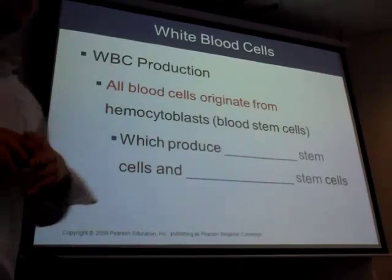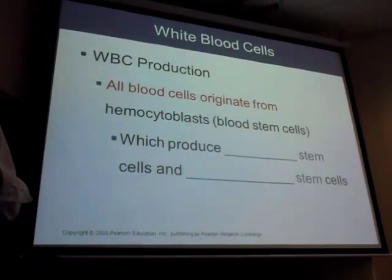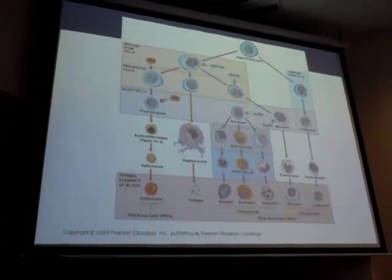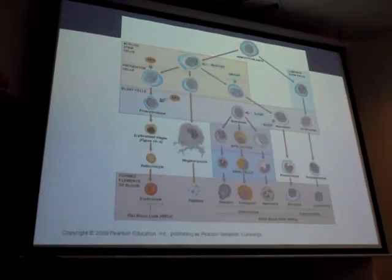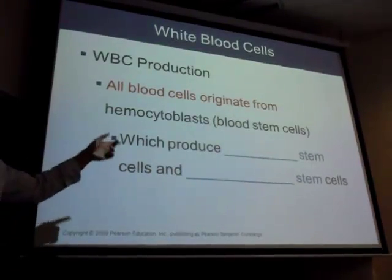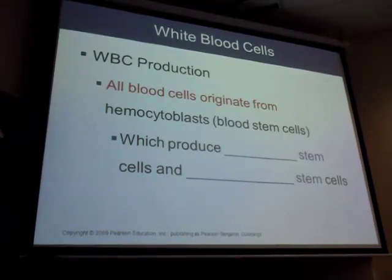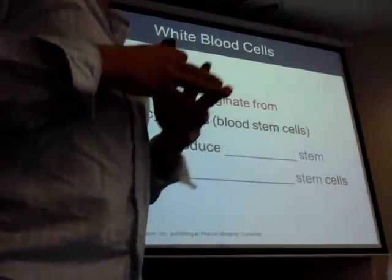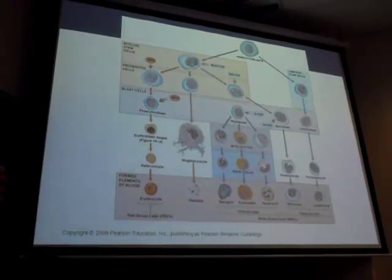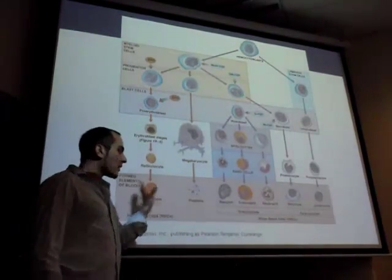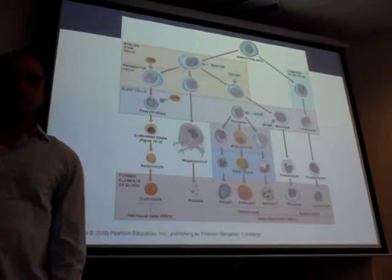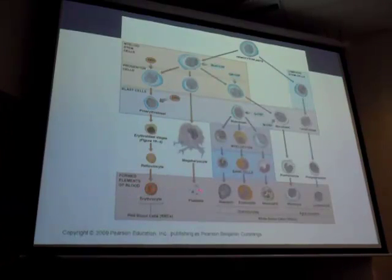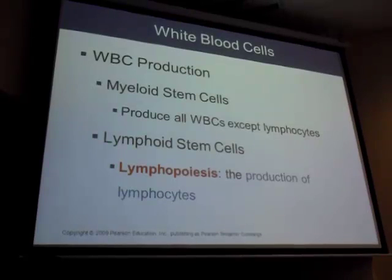From the hemocytoblast, cells can go down two paths: to the right is the lymphoid path, to the left is the myeloid stem cell path. Every cell starts as a hemocytoblast and goes either the myeloid or lymphoid route. At the bottom of the flowchart you end up with seven different cell types: erythrocytes, platelets, and five types of leukocytes.